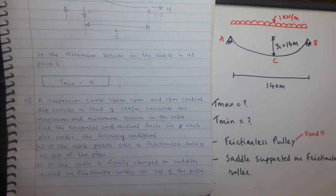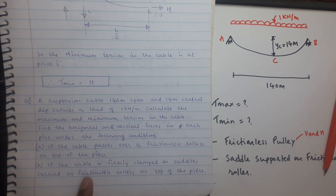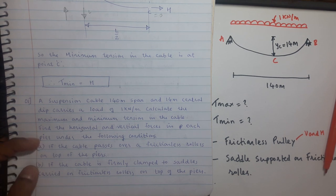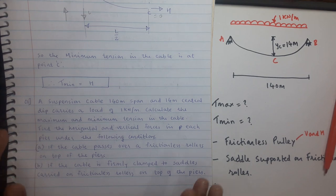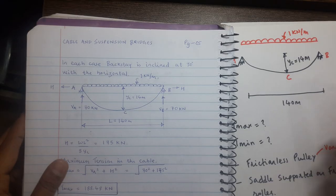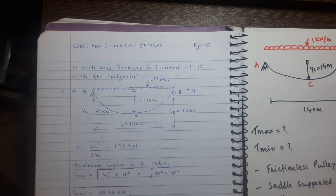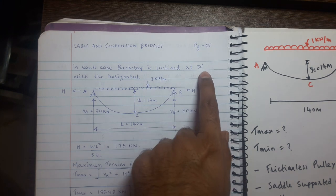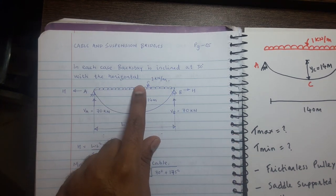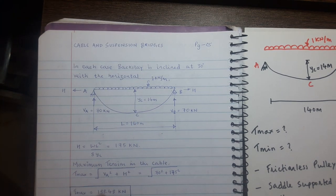We need to find the horizontal and vertical forces when the cable passes over a frictionless roller on top of the pier, and when the cable is firmly clamped to a saddle carried on a frictionless roller. In each case, the angle of the backstay is 30 degrees with respect to the horizontal.